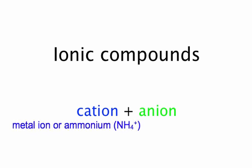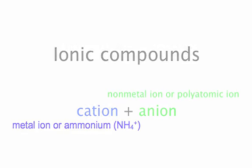Cations are either a metal ion or ammonium, which is NH4+. And an anion is a non-metal ion or a polyatomic ion.